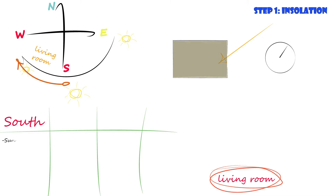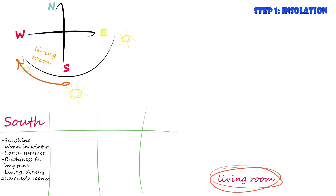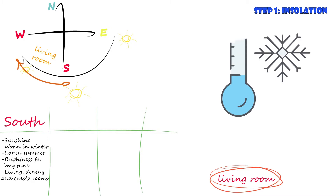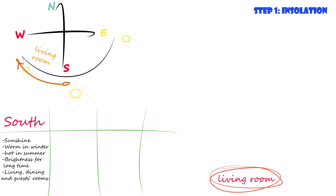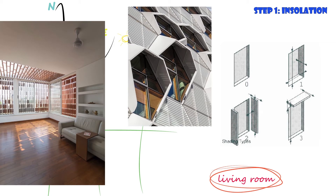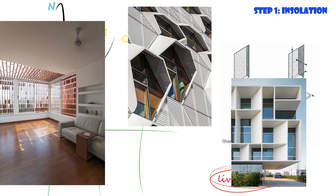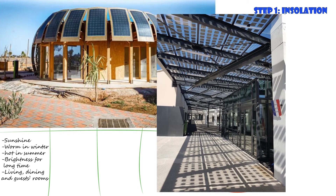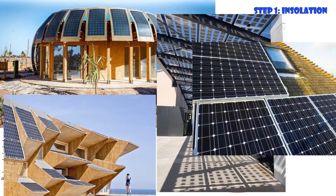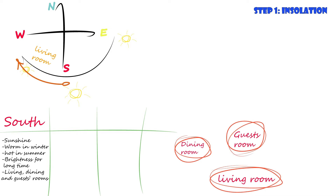You want the living room to be bright since we live and spend time in it. That helps a lot if the climate is cold. But if the climate is already hot, you don't want to make it even hotter — so as an architect, your job is to find solutions like sunbreakers or mirrors to reflect sun rays and reduce heat while keeping the room bright. You can also add solar panels above the sunbreakers. So the living room, dining room, and guest room should be on the southern or south-western side.